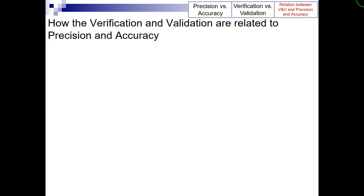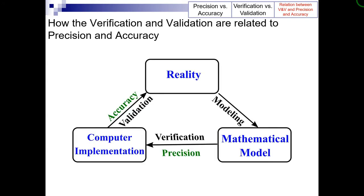Now let's see how verification and validation are related to precision and accuracy. Verification deals with quantifying the precision of the model by generally performing a grid convergence or time step convergence study, while validation is concerned with quantifying the accuracy of the mathematical model by comparing numerical solutions to experimental data. This figure shows how the verification and validation processes are related to precision and accuracy.